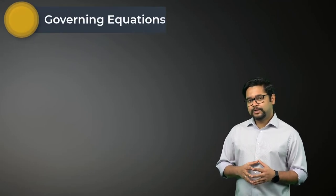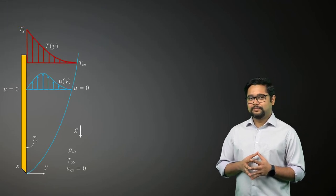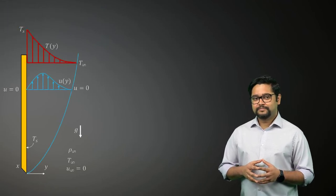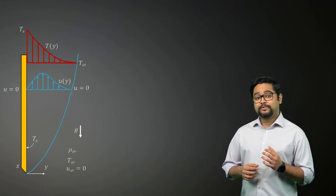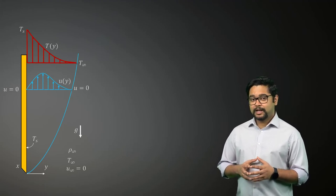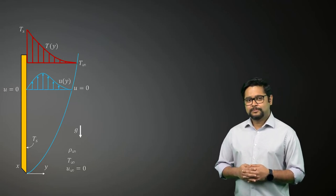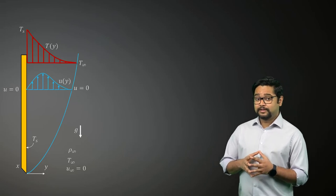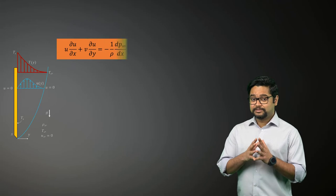Now that we have some understanding of natural convection, let's quickly look at its governing equations. Consider the laminar boundary layer flow shown here. We assume the flow to be two-dimensional, steady with constant property conditions, and we assume that the boundary layer approximations are valid. With gravity acting in the negative x direction, the x-momentum equation can be written as this.